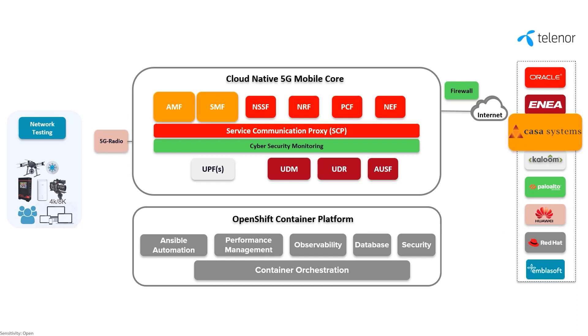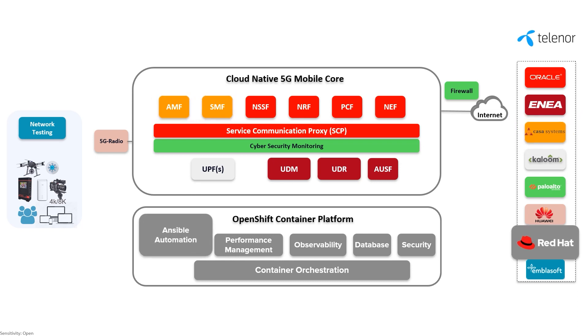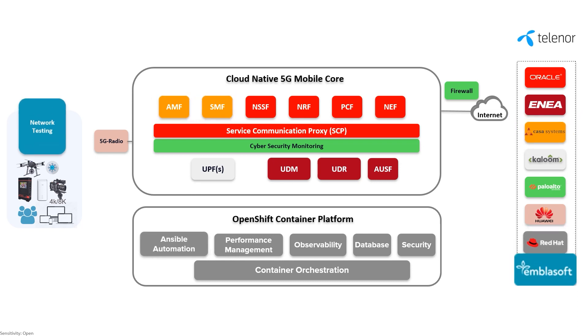When it comes to end-to-end automation, we are leveraging Red Hat's Ansible automation platform, while Emblasoft provides automated network load and integration test capabilities.